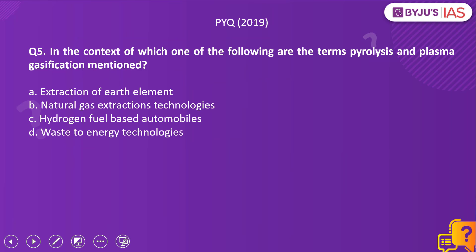Now let us take up a previous year question from 2019. In the context of which of the following are the terms pyrolysis and plasma gasification mentioned? Option A, extraction of rare earth elements. Option B, natural gas extraction technologies. Option C, hydrogen fuel-based automobiles. Option D, waste-to-energy technologies.